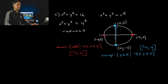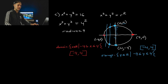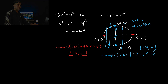Is this relation a function? No, it's not — it fails the vertical line test pretty much everywhere except the x-intercepts, because there are multiple points that share the same x-value. So a circle is always not a function. And that is the end of the video.